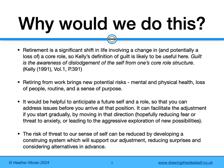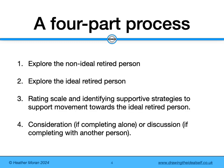Reducing surprises and considering alternatives in advance. This, like drawing the ideal self, is a four-part process. First, you will explore the non-ideal retired person, then the ideal retired person. Then do a rating scale identifying supportive strategies to support movement towards the ideal retired person. And then if you're completing it alone, there's a period of consideration where you look at what you found out, or discussion if you're completing it with another person.